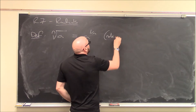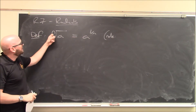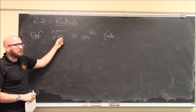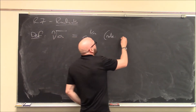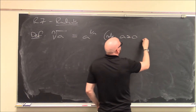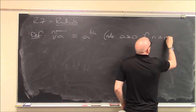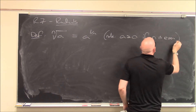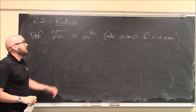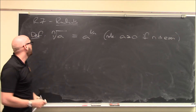I'll note one thing: if n is even — so if this is like a square root — the inside has to be non-negative. So a has got to be greater than or equal to 0 if n is even. Otherwise it just doesn't make any sense. This is simply another symbol for a to the 1 over n — the nth root of a.